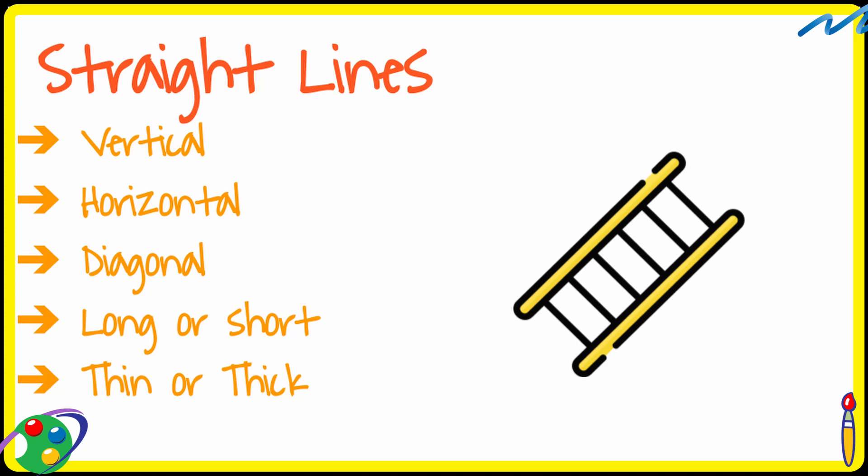Now we will talk about the straight lines a bit more. A straight line can be a vertical straight line. It can be a horizontal straight line. It can be a diagonal straight line. It can long or short or it can thin or thick. All these create all kinds of varieties of straight lines.